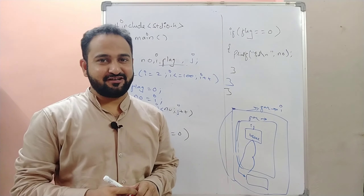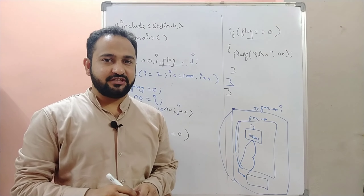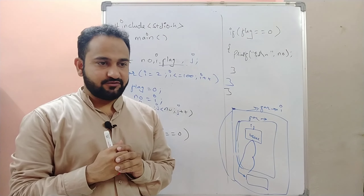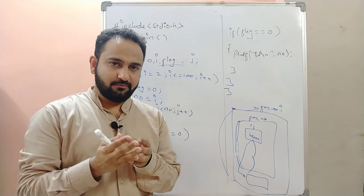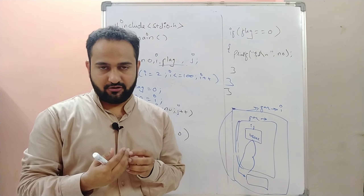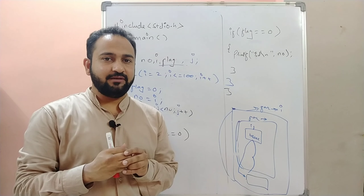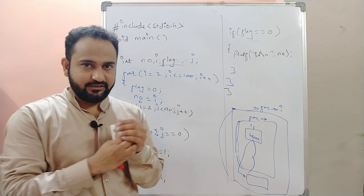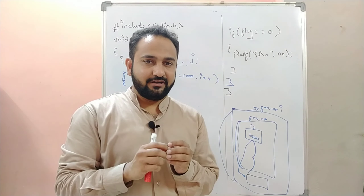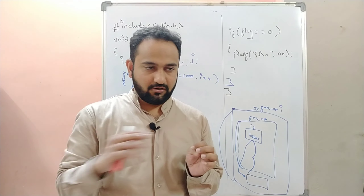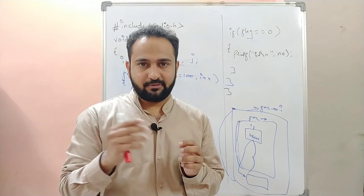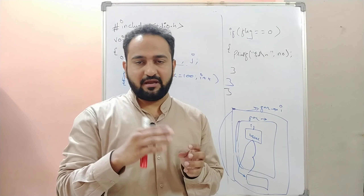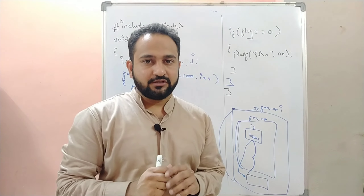Hello, I'm Sayyad Amir. Welcome to a new video. In this video we'll see the last version of the question related to prime numbers. So far we have discussed checking whether a number is prime or not, and in the second part we saw printing all prime numbers between 1 to 100. Now the third type is printing the first hundred prime numbers — or it could be first fifty, first thousand, or first N prime numbers.